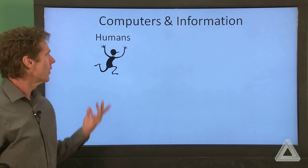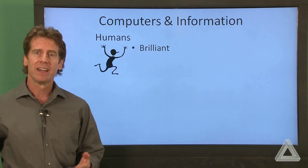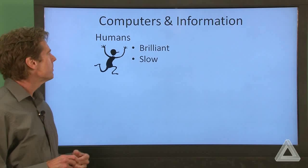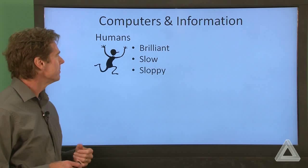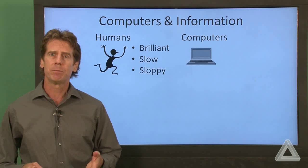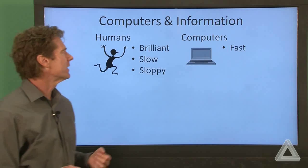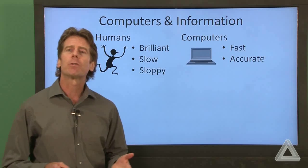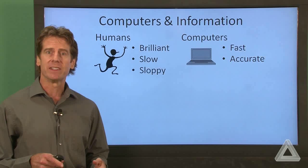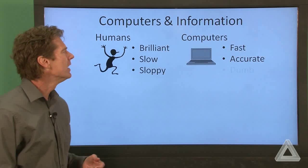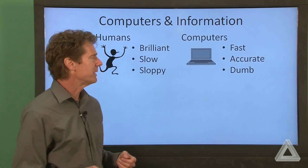We of course are humans, and humans are at times brilliant, but when it comes to computation, they're very slow and they can be very sloppy. Now let's contrast that with computers in general. They're blindingly fast when it comes to computation, they're incredibly accurate, they essentially never make mistakes. It's programmers that make mistakes, not the computers. But they're rather dumb machines, or very simple machines might be a nicer word.